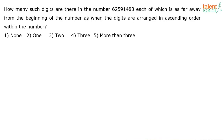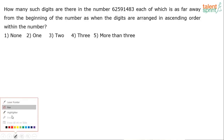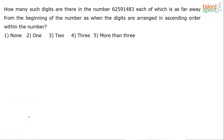How many such digits are there in the number 62591483, each of which is as far away from the beginning of the number as when the digits are arranged in ascending order within the number? One minute is what you have, your clock's ticking now.